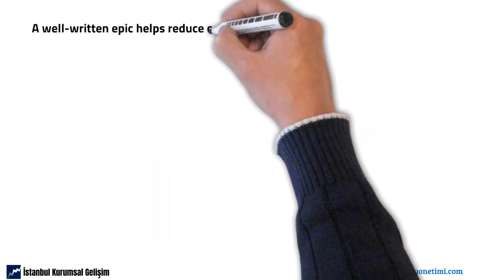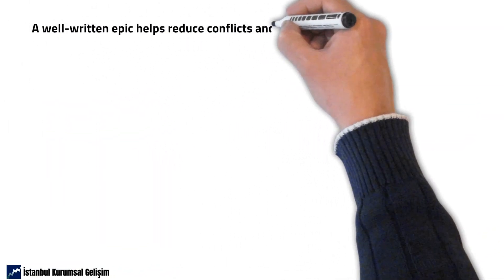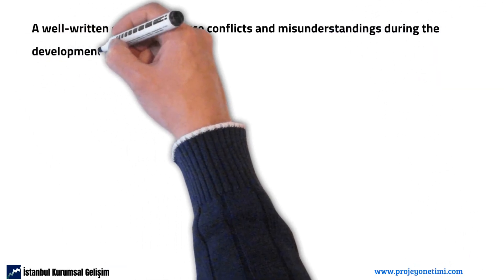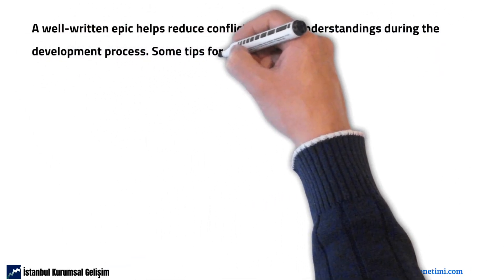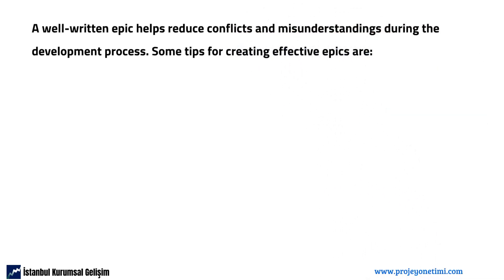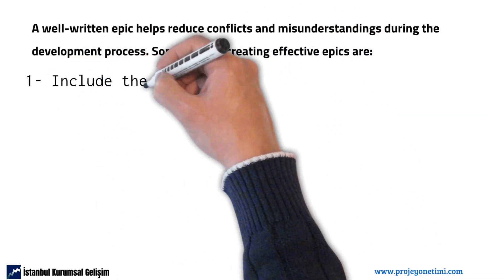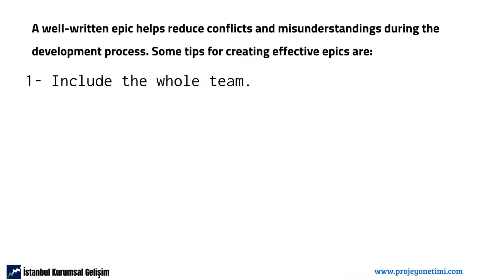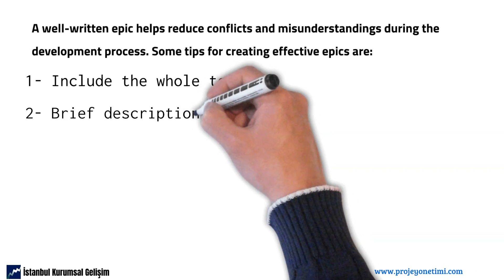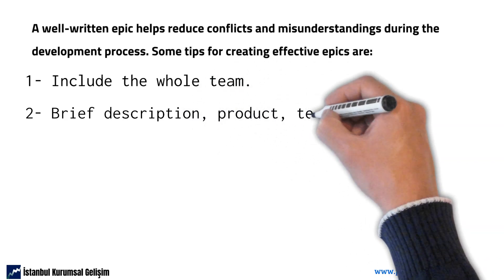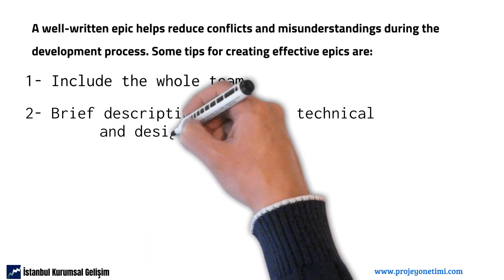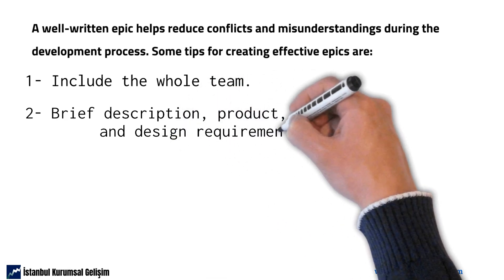A well-written epic helps reduce conflicts and misunderstandings during the development process. Some tips for creating effective epics are: 1. Include the entire team when writing the epic. 2. Create content that will include a short description to define epic features, inclusive product requirements, technical requirements, and design requirements.